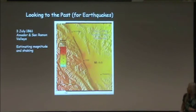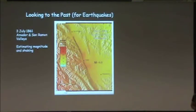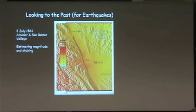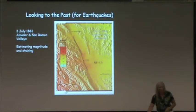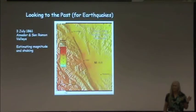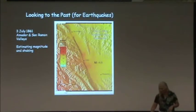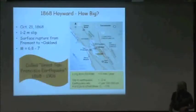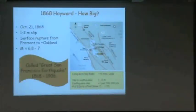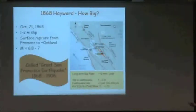The Amador Valley earthquake of 1861 — Jack Boatwright has been looking at old earthquakes, examining newspaper reports and damage reported on adobes. We think the epicenter was around Dublin and that it ruptured the Calaveras fault. The great San Francisco earthquake happened in 1868 and ruptured along the Hayward Fault's southern segment. We think it only ruptured to Oakland. The city of Hayward was basically demolished with one to two meters of slip along a section maybe 30 kilometers long.